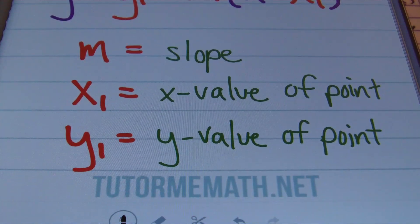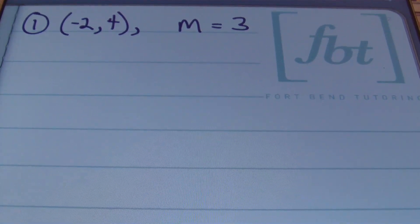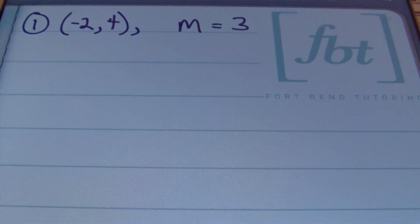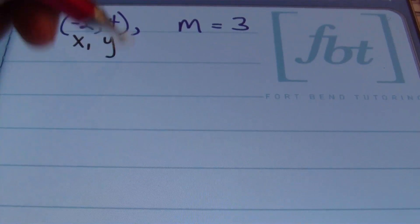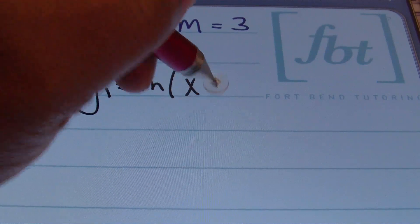Let's look at some problems. In problem number one, I'm asked to find the equation of a line in point-slope form given the point negative two, four from the line and a slope of three. The name point-slope form is used because they give you a point and the slope. We're going to label that first point as x1, y1.